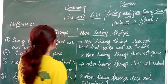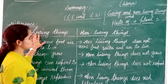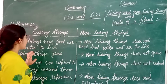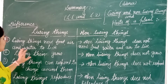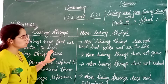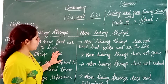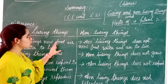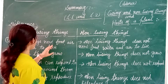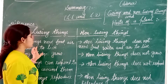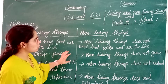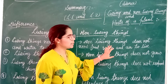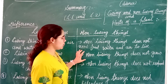Now let us discuss the differences between living things and non-living things. Living things need food, air, and water to live — that is, for survival, living things need food, and for breathing they need air and water. But non-living things do not need food, water, and air to live.